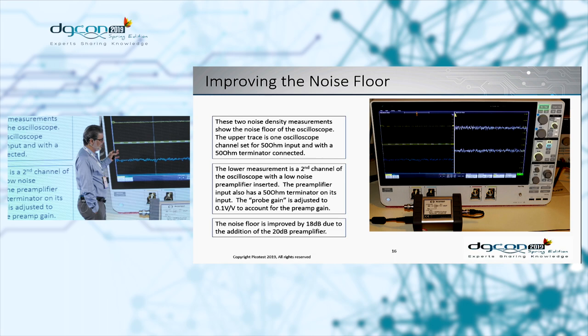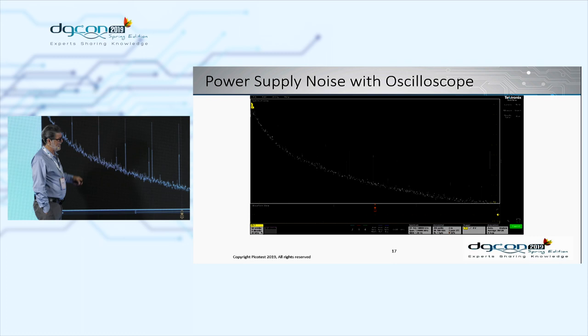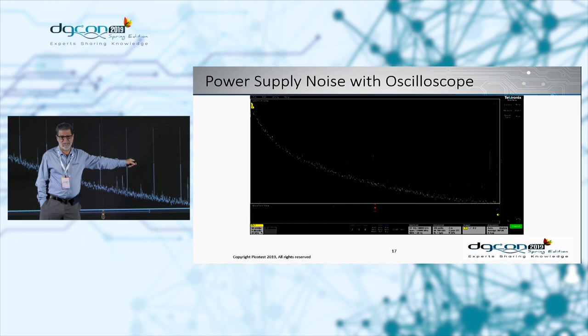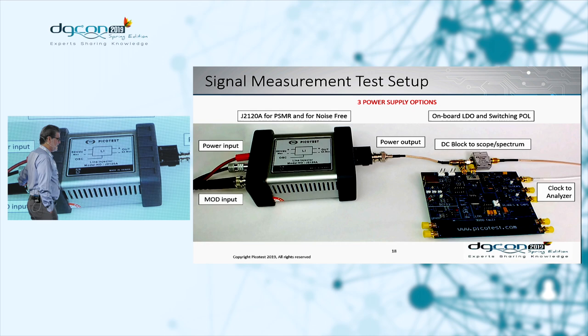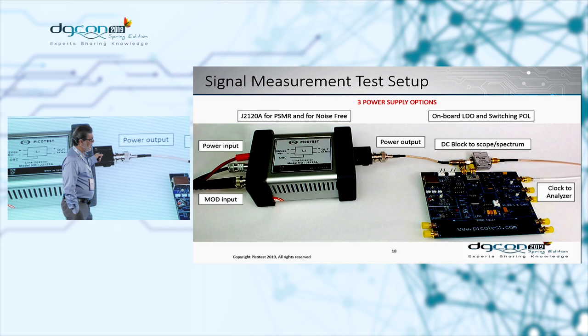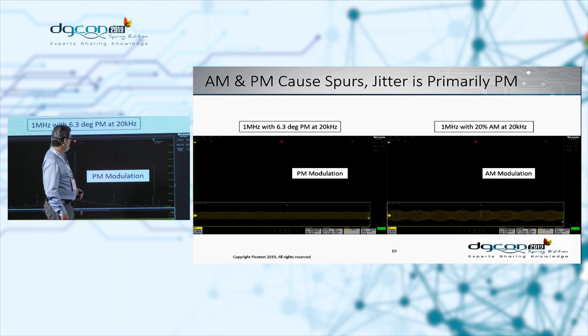We want to make sure we understand the noise floor — measure it before making any real measurements. Then we can go ahead and make the measurement of noise density. There it is: you can see the 1/f noise and all the spurs on that power supply. Now we need to make signal measurements. This line modulator allows us to inject noise in a PSRR fashion. We put in a signal, it mixes with the DC, outputs DC plus the signal, and we put that right into the power supply. Then we can look at the clock analyzer — at phase noise or the spur that's generated.